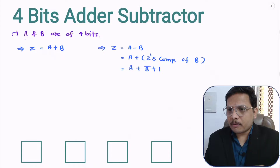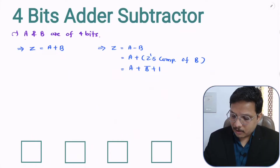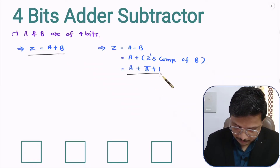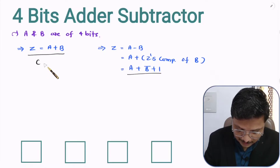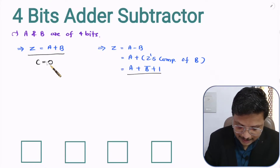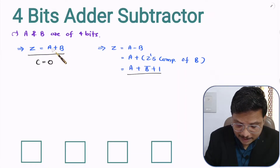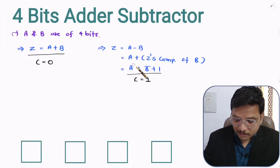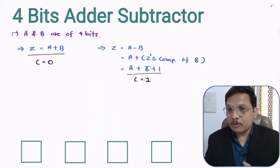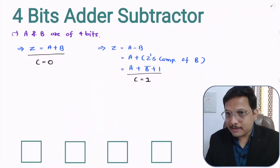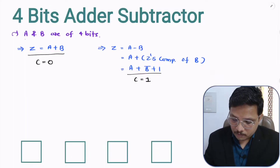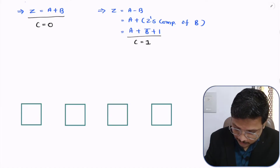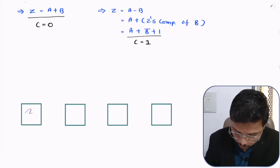That is how we perform addition and subtraction. Now how will we be deciding whether to perform addition or subtraction? That is based on variable C. Let us say C equals 0 decides that A and B should be added, and if C equals 1 then we want to do subtraction operation. Now I will show you how we can implement this with a circuit. For that, I will be considering four full adders.